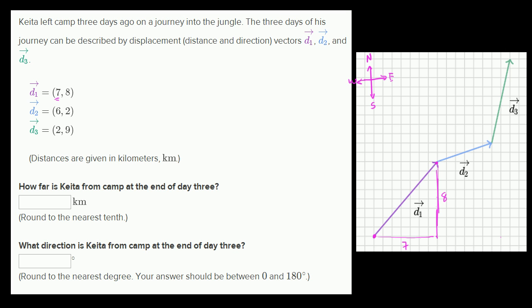Then on day two, he went six kilometers to the east, and two kilometers to the north. So he ends up right over here — six and two.